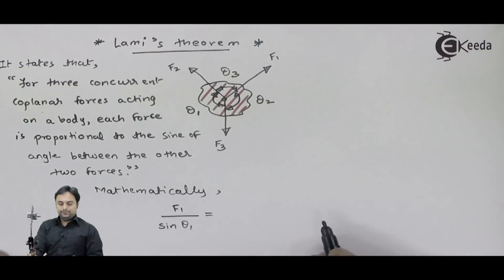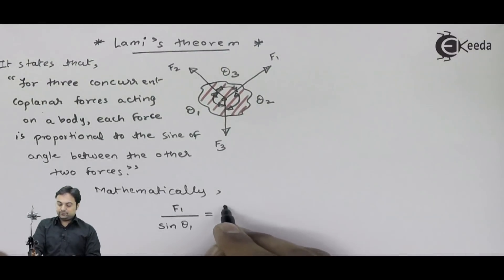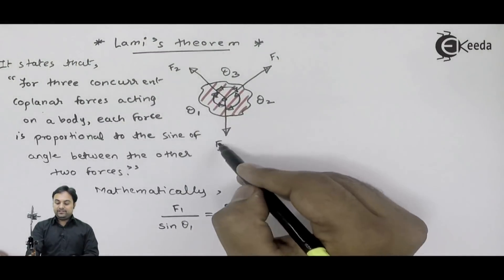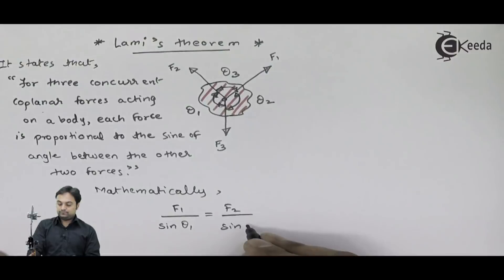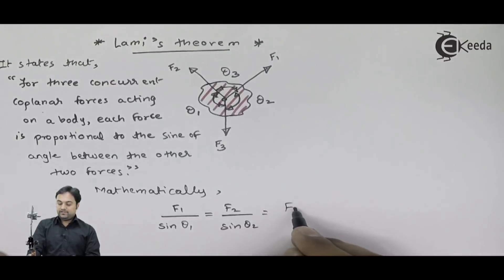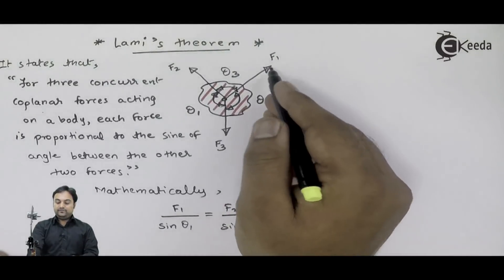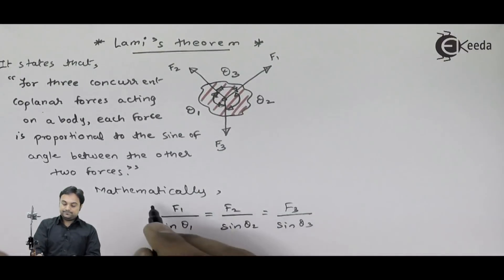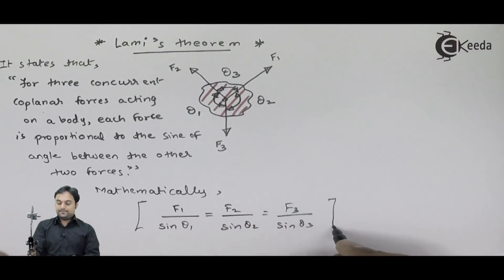For F2, I will write F2 divided by the sine of the angle between F1 and F3, which is sin(theta2). For F3, I will write F3 divided by the sine of the angle between F1 and F2, which is sin(theta3). So here we have the complete relation for Lame's theorem.